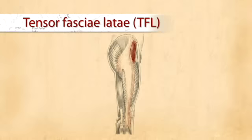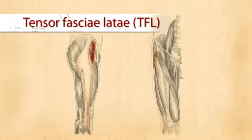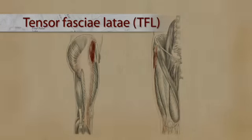The tensor fascia latae, or TFL, is a small, superficial muscle located on the lateral side of the upper thigh. Approximately three fingers wide, the TFL is easily accessible between the upper fibers of the rectus femoris and the gluteus medius.